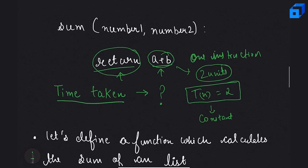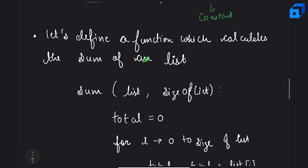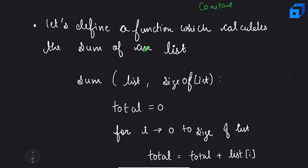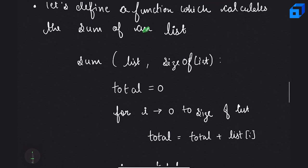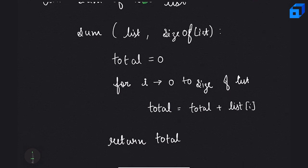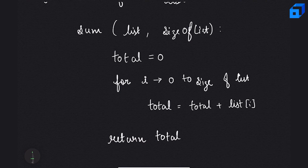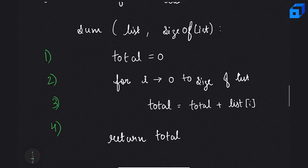Now let's define a function that calculates the sum of a list. This function takes two arguments: the list and its size. We initialize total to zero, iterate over the list adding all elements to total, and finally return total. This function has four instructions. Instruction one is a single assignment statement, which takes one unit of time.